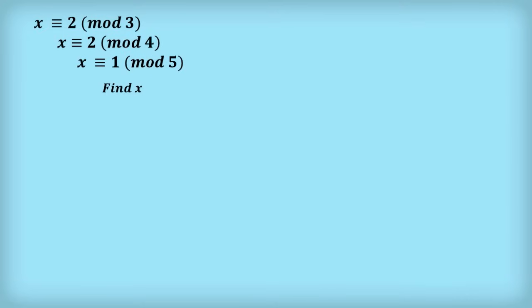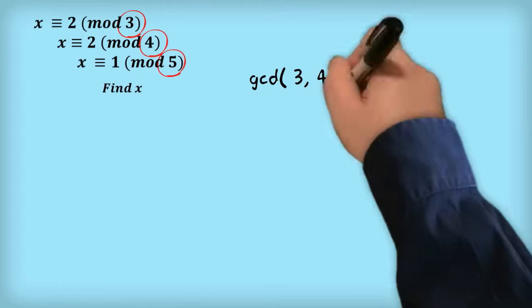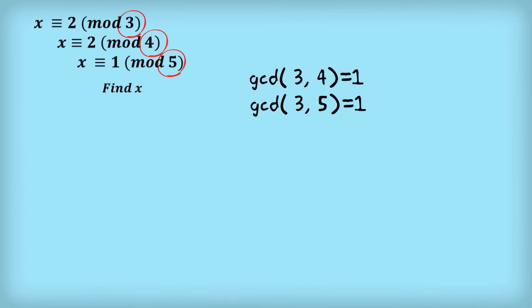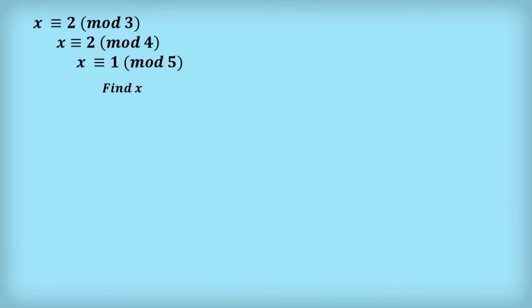To use the Chinese remainder theorem, we first need to check that every pair of modulos have a GCD of 1. The GCD of 3 and 4 is 1, the GCD of 3 and 5 is 1, and the GCD of 4 and 5 equals 1. So we can use the Chinese remainder theorem to find x.